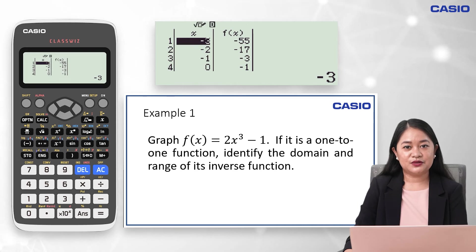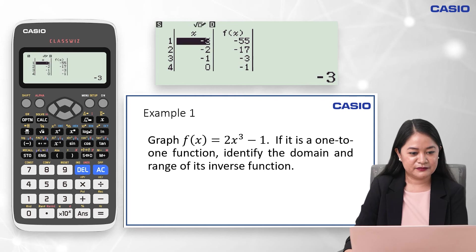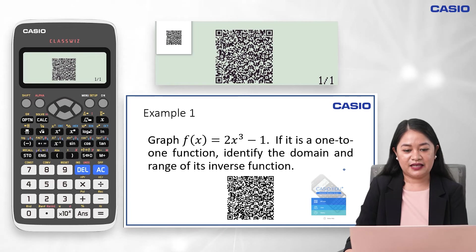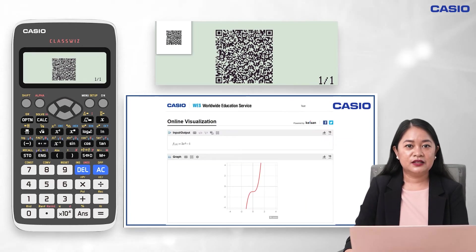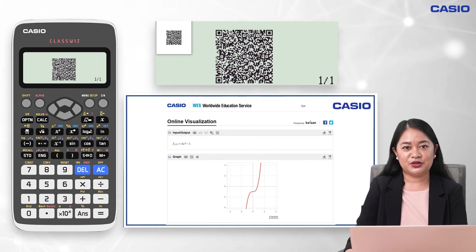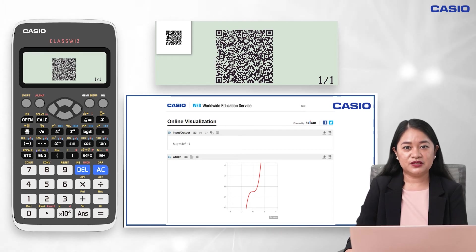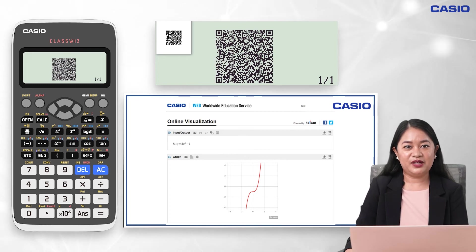From the table of values on the screen, press Shift and then the Option button. A QR code will be flashed on the calculator screen. Scan it using a QR code scanner or the KASHA EduPlus app, then open the link once scanned. You will be directed to the Worldwide Education Service of KASHA, which presents the graph of the given function. With this graph, we can confirm that f(x) = 2x³ − 1 is a one-to-one function and its domain and range are the set of real numbers. So the domain of f(x) = 2x³ − 1 will be the range of its inverse function, and the range of f(x) = 2x³ − 1 will be the domain of its inverse function.